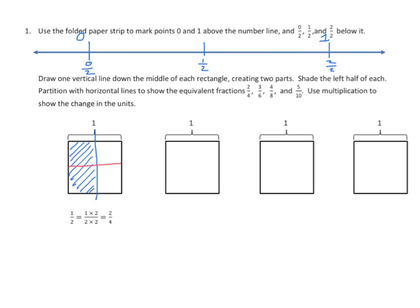Let's do another — 3 sixths. Again, we'll partition this as accurately as we can, keeping a nice straight line, and we're going to shade that 1 half. Now we want to make it into sixths. In order to do that, we're going to have to partition this into six parts using three horizontal lines. So we start with 1 half, and that 1 half is partitioned into three parts: 1 times 3 over 2 times 3 for a total of six partitions — we get 3 sixths.